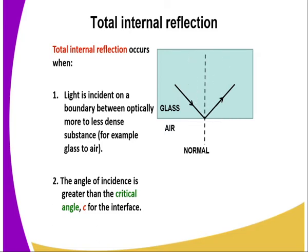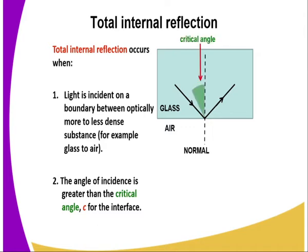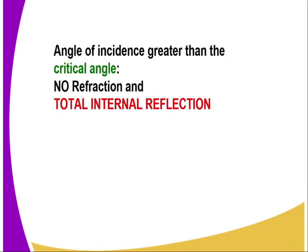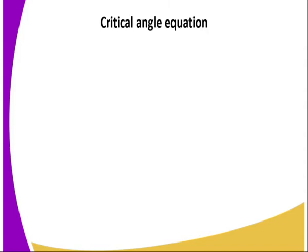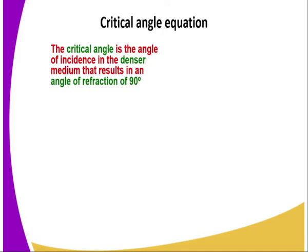As you can see, if the light is incident at a given angle and we increase the angle of incidence, the incident ray is totally reflected internally and there is no refraction that occurs. So the critical angle is the angle of incidence in the denser medium for which the angle of refraction is 90 degrees. When this happens, there is no refraction and total internal reflection takes place.